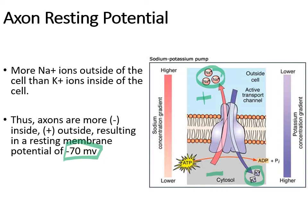If you actually put a voltmeter on the inside and the outside of these nerve cells, you get a reading of negative 70 millivolts, because there's a positive charge on the outside and a negative charge on the inside. Lots of sodium ions on the outside, not as many positive charge ions on the inside — they're outweighed by the negatively charged proteins and other things on the inside.